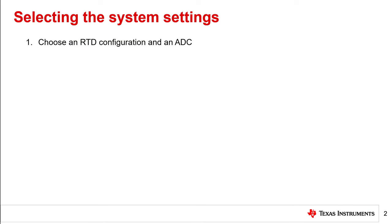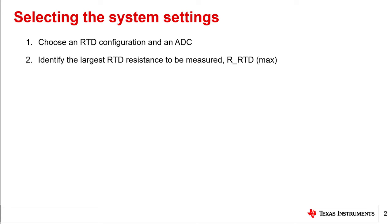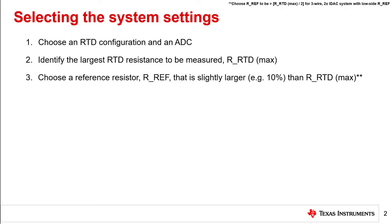The first step to select the settings for an RTD measurement system is to choose an RTD configuration and an ADC. This includes the reference resistor location and the RTD wiring configuration. Second, identify the largest RTD resistance that needs to be measured by the system, which is called RRTD Max. This single max value is selected from all different RTD types or temperature ranges. Third, select a reference resistor value that is slightly larger than RRTD Max. Typically choosing RRF to be 10% larger than RRTD Max is sufficient to ensure that the amplified input signal is never larger than the reference voltage, which would result in clipped codes.